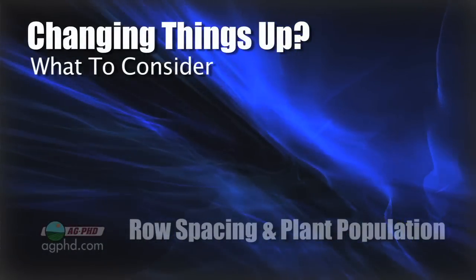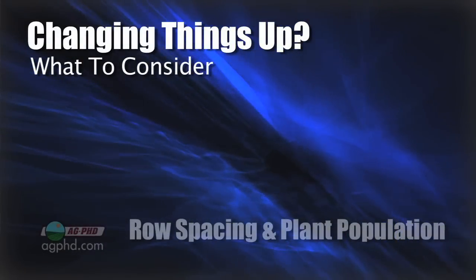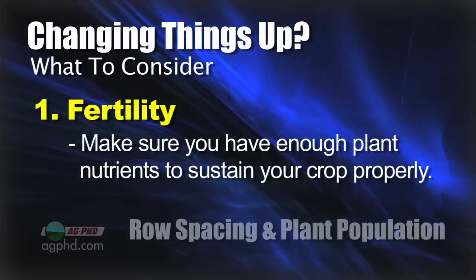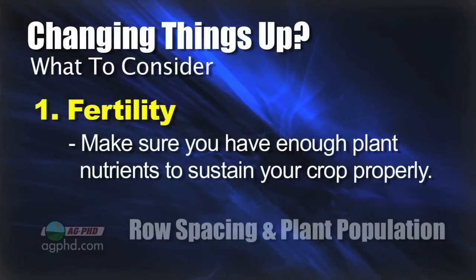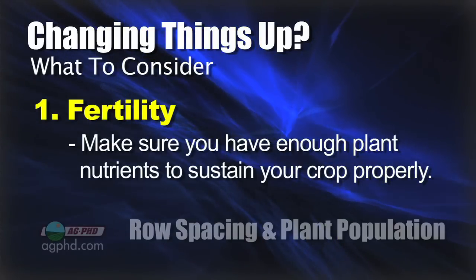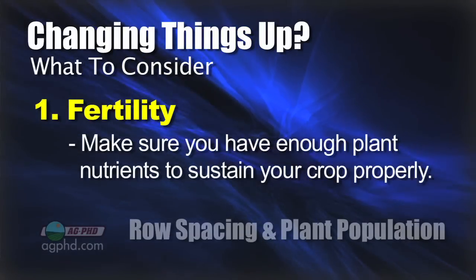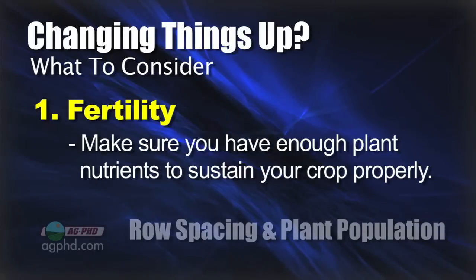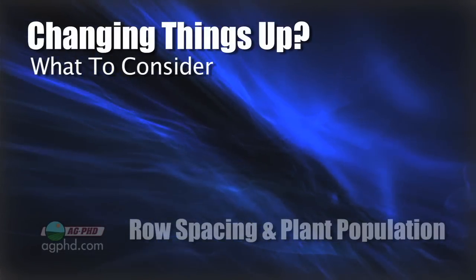Here are some of the basic things you need to consider if you're going to be changing your row spacing or your planting population. Number one is fertility. This is one of the most common mistakes — guys switch to twin rows or really up their planting population but leave their fertility the same. If you're switching to twin rows or going to a higher population with hopes of getting better yield, make sure you feed the crop. If you don't give the crop extra food, how are you going to produce more yield?